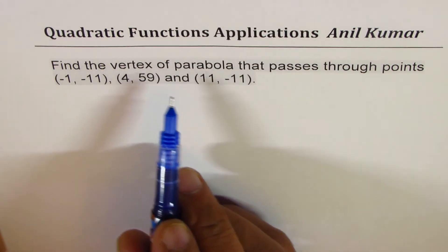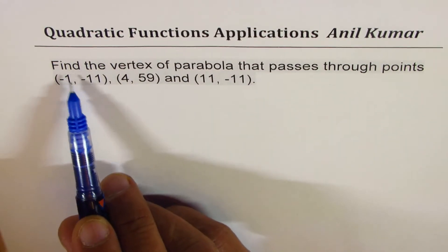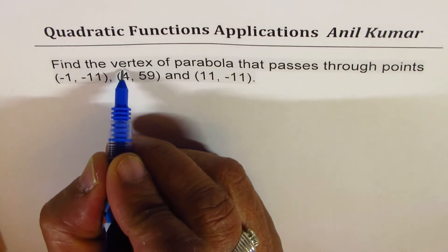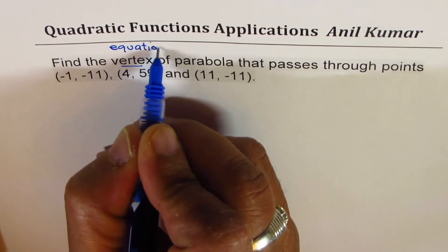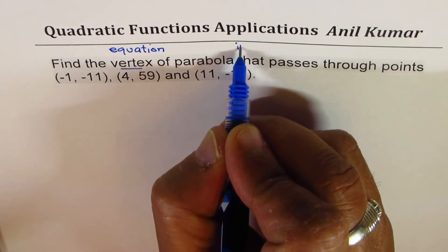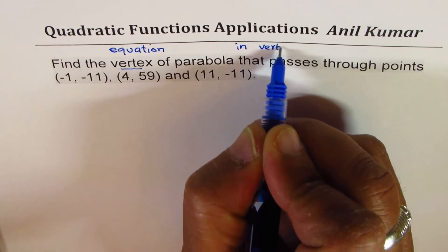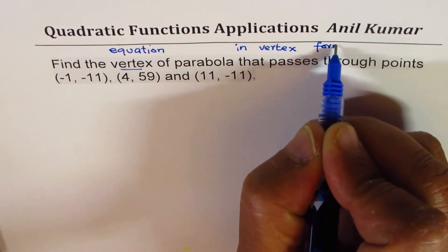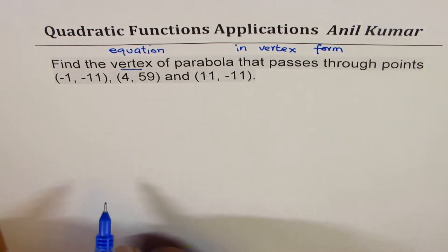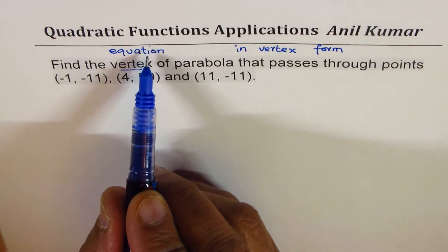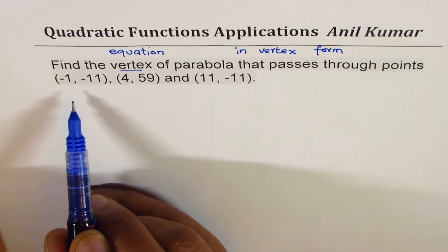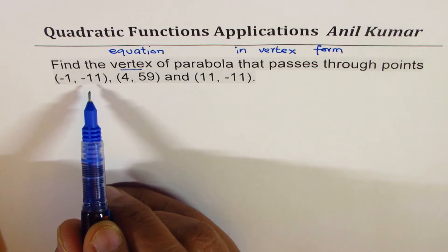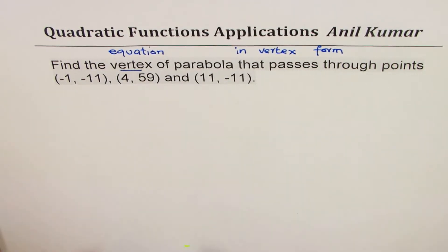I'll make the question more complicated — we'll also find the equation, not just the vertex. So, find the equation of parabola in vertex form that passes through the points (-1, -11), (4, 59), and (11, -11). So, let this be your question and let's begin by selecting different kinds of methods.